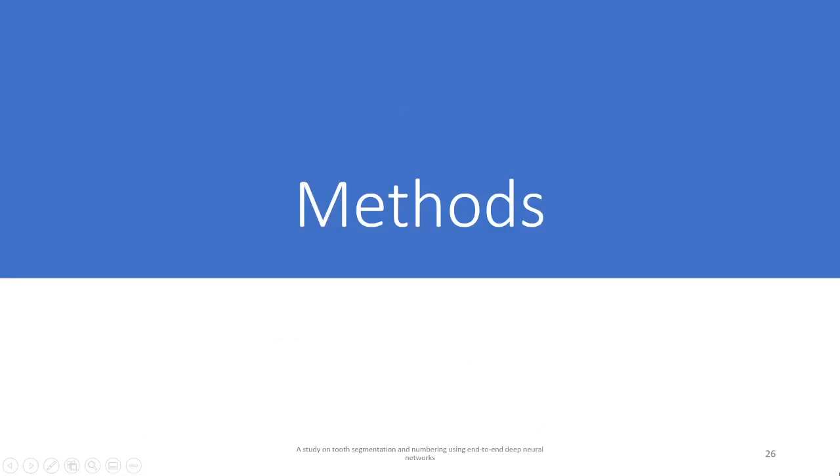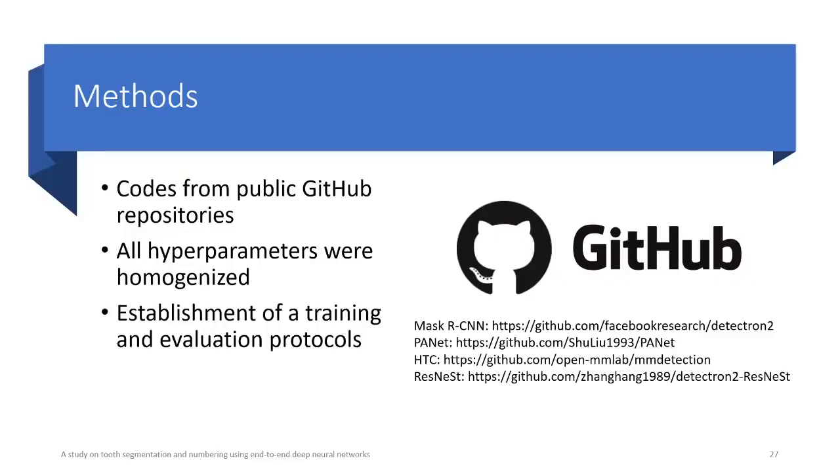After having discussed the materials we used, we can now focus on our work methods. All neural networks implementations came from public GitHub repositories, as listed here on the right, with codes usually provided by the original authors. These implementations came with different hyperparameters, which needed to be homogenized. For that, we established the training and evaluation protocols that I'll talk about in the following slides.